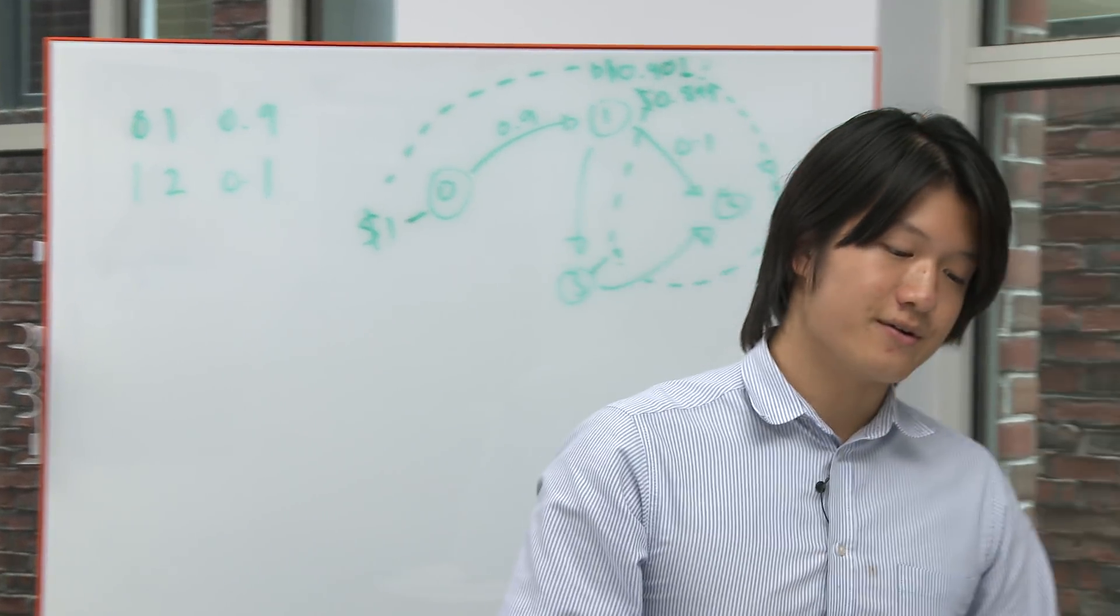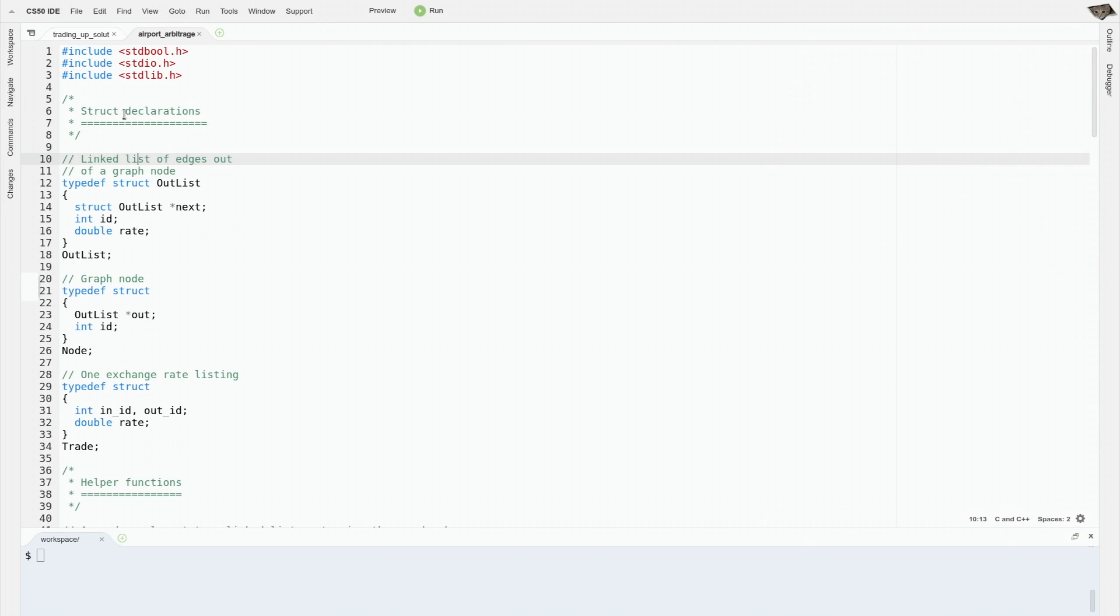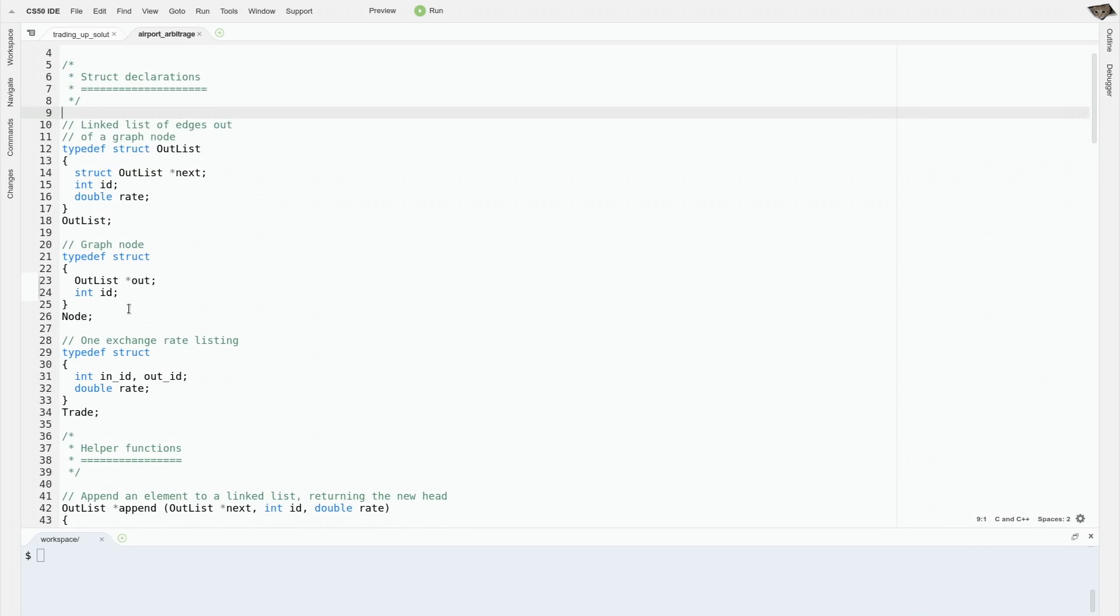So now we can look at the code. First we need to set up some structures so that we can deal with graphs. We'll have each node know a linked list of its outputs so that we can iterate over them easily. Each node will know a linked list of the nodes that it can get to and the exchange rates that it needs to get there. And we'll also know its own ID.